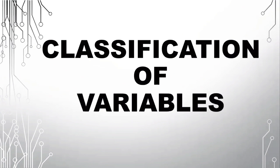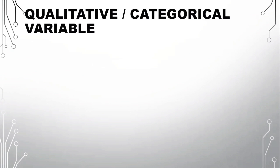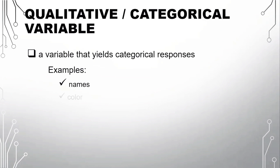Let's now proceed with the classification of variables, particularly we have two. The first one is the qualitative or categorical variable. It is a variable that yields categorical responses. Examples: names, color, marital status. Remember that qualitative variable is the classification of individuals based on some attributes or characteristics. So qualitative variable means classification.